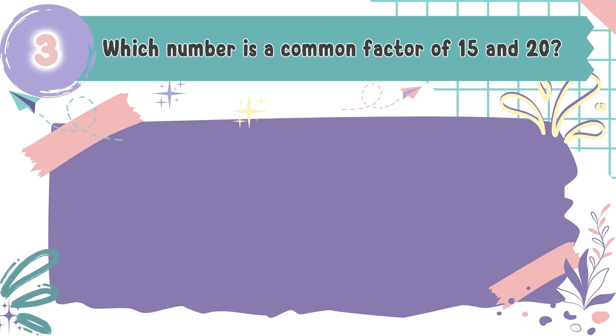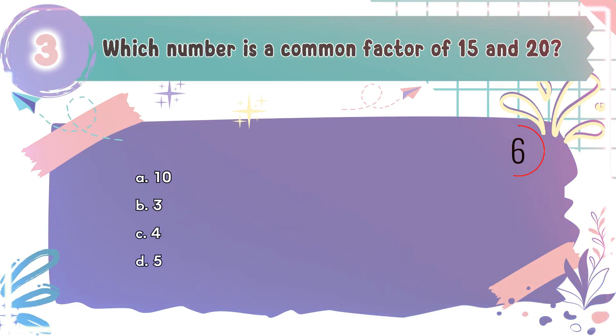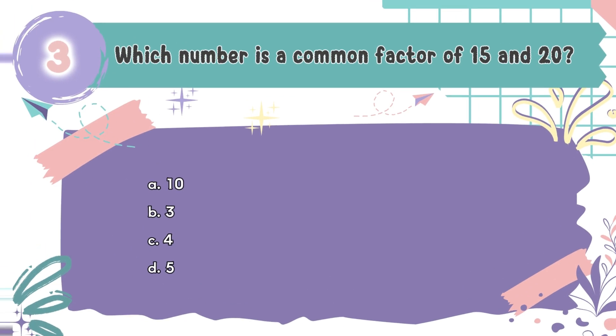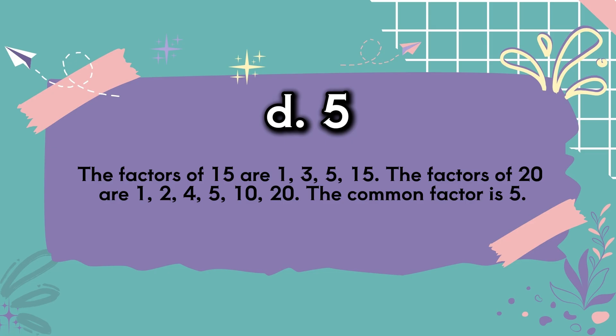Question number 3: Which number is a common factor of 15 and 20? The choices are A: 10, B: 3, C: 4, D: 5. The correct answer is D, 5. The factors of 15 are 1, 3, 5, and 15. The factors of 20 are 1, 2, 4, 5, 10, and 20. The common factor is 5.